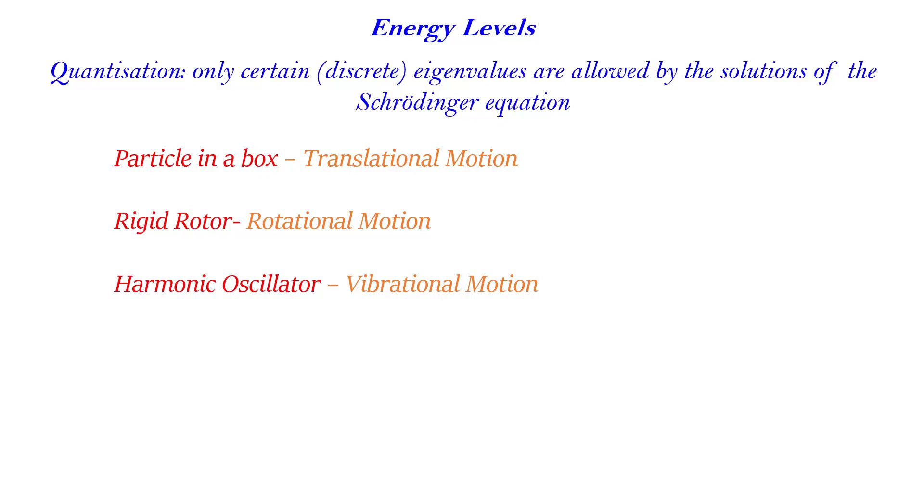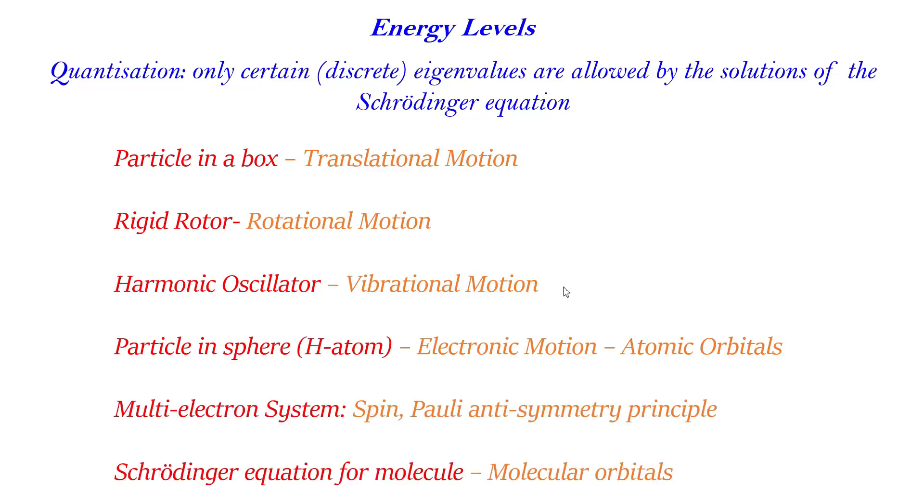The molecules that have bonds can vibrate, and these vibrations can be expressed by this harmonic oscillator quantum model. Also, particle in a sphere, we have solved these types of systems for hydrogen atom. Here we get the results as electronic motions and the energy levels of the hydrogen atom, which is actually nothing but the atomic orbitals.